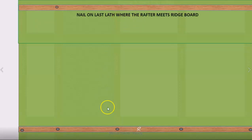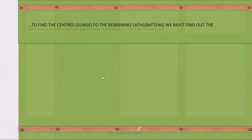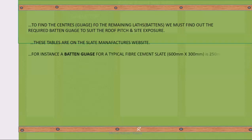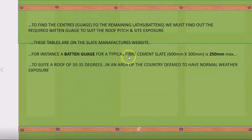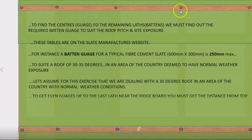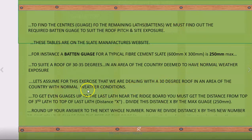You measure the distance from the top of the first lat to the top of the last lat, then take that figure and divide it. For a typical situation, the maximum back gauge is 250mm, though this depends on what part of the country you're in. For this particular roof it's probably going to be a couple of millimetres less than that, because you don't want to end up with the last row being too small.